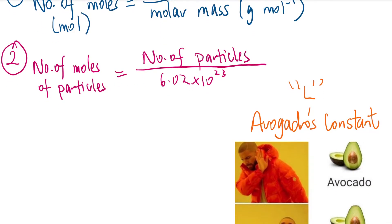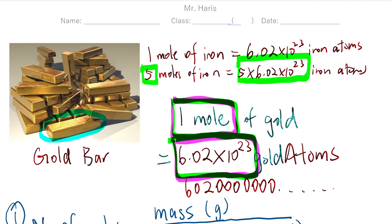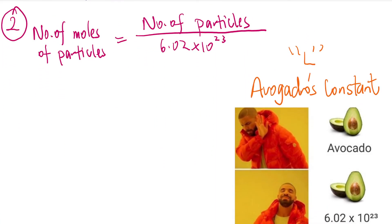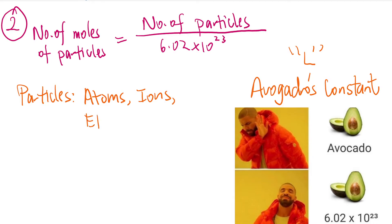What does 'particles' mean here? Earlier I said sometimes you wouldn't be using atoms. Particles can mean atoms, they can mean ions, they can mean electrons, or they can also mean molecules. As we go through this unit I'll keep referring back to these two formulas.